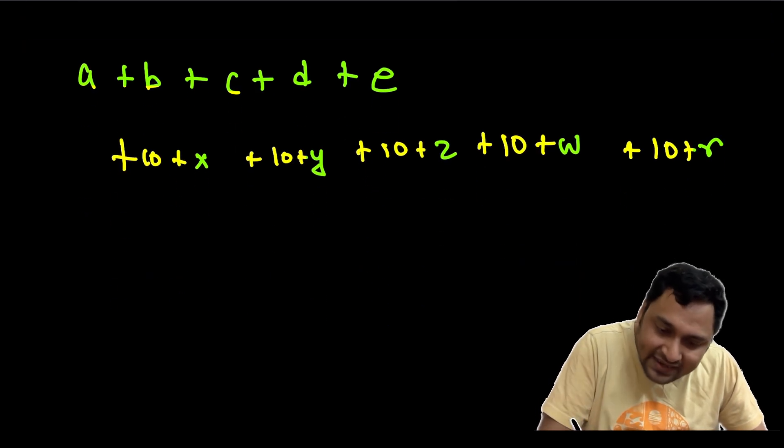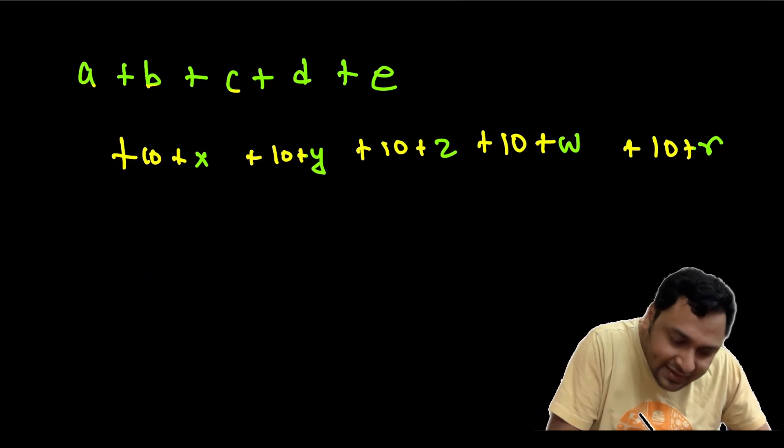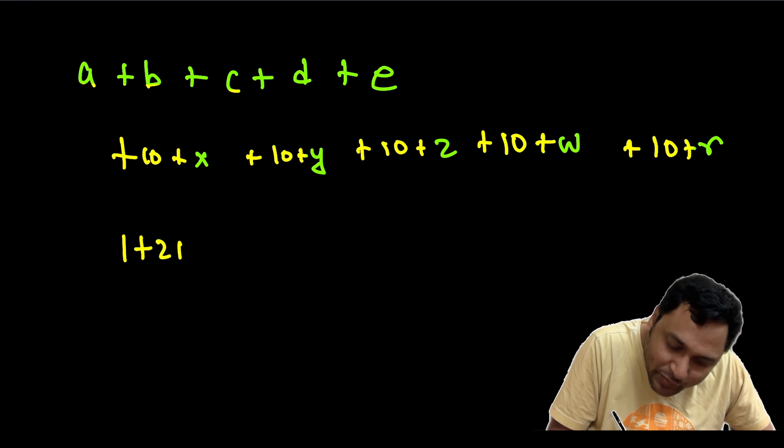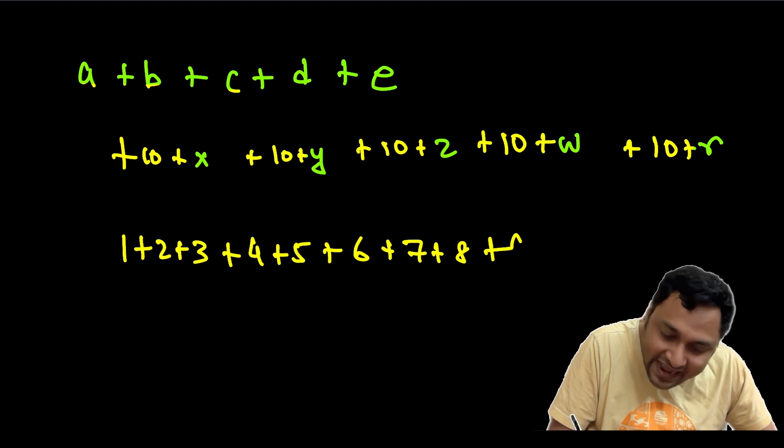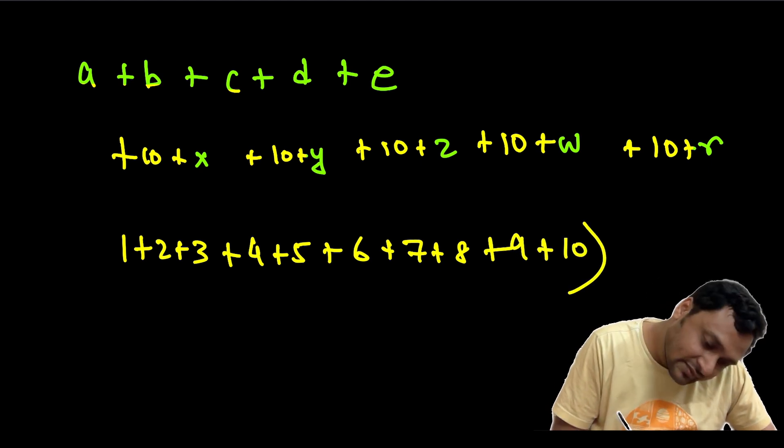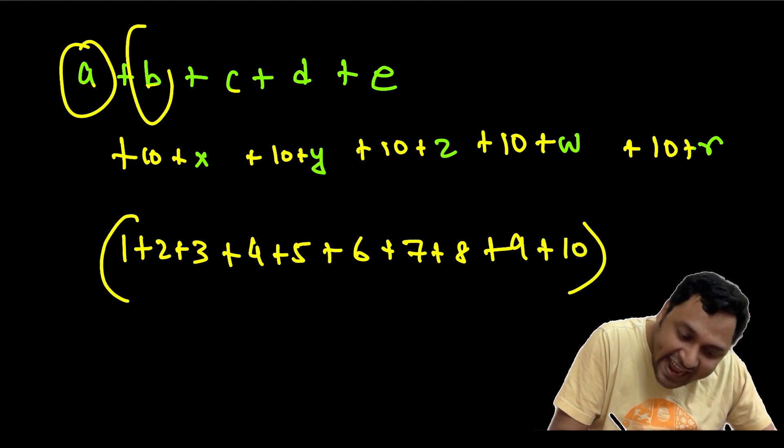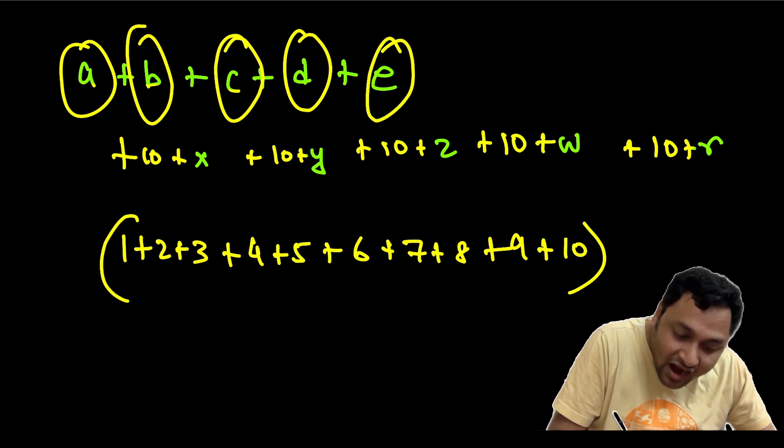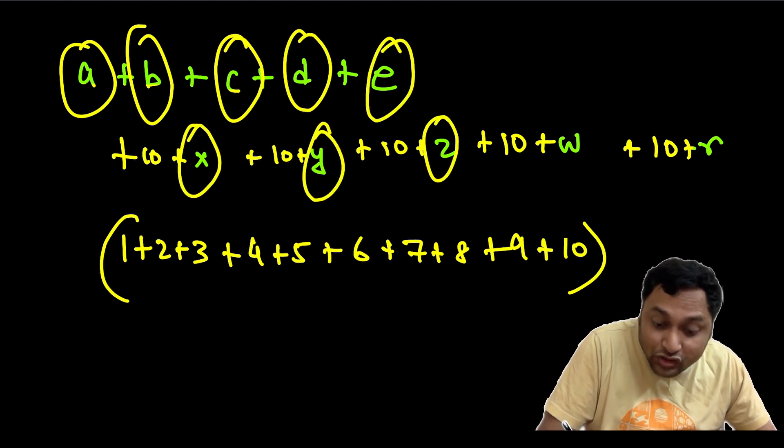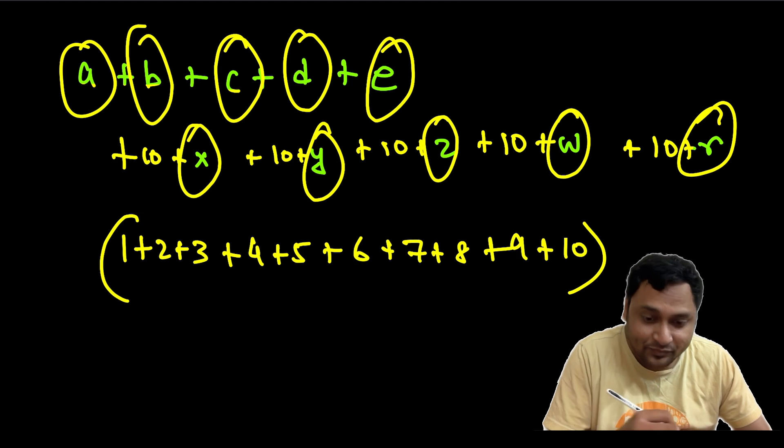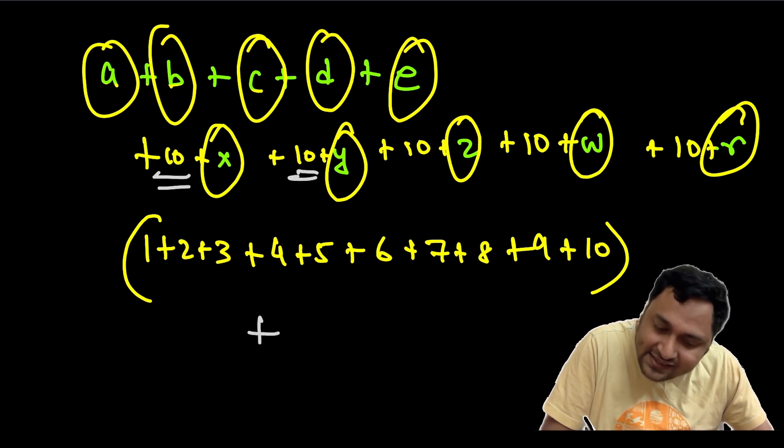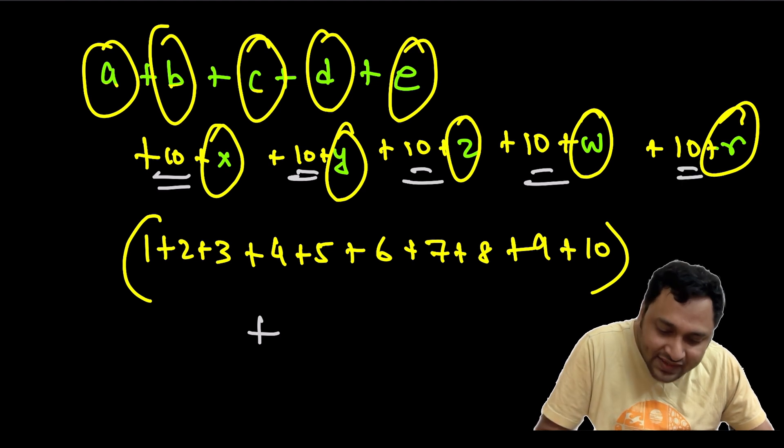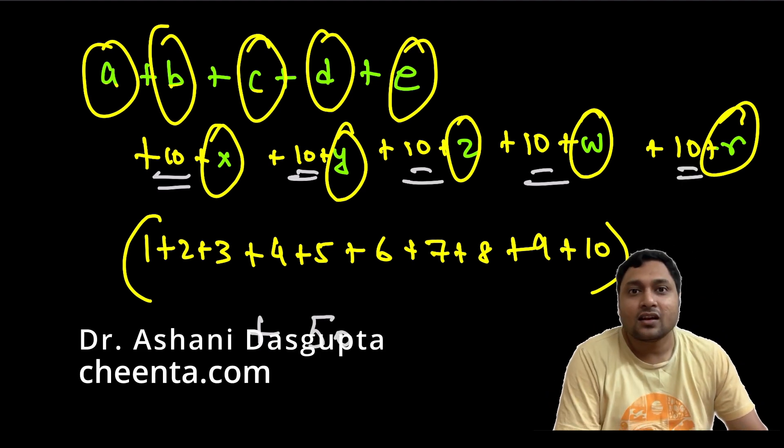So, we can simply write that this is 1 plus 2 plus 3 plus 4 plus 5 plus 6 plus 7 plus 8 plus 9 plus 10. These 10 numbers are after all those 10 numbers. And we have 5 additional 10s. So, 50. We are done.